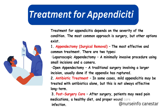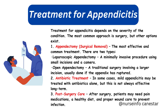Treatment for Appendicitis. Treatment depends on the severity of the condition. The most common approach is surgery, but other options exist. 1. Appendectomy — surgical removal — is the most effective and common treatment. There are two types: Laparoscopic appendectomy, a minimally invasive procedure using small incisions and a camera; and open appendectomy, a traditional surgery involving a larger incision, usually done if the appendix has ruptured. 2. Antibiotic treatment: In some cases, mild appendicitis may be treated with antibiotics alone, but this is not always effective long term. 3. Post-surgery care: Patients may need pain medications, a healthy diet, and proper wound care to prevent infection.